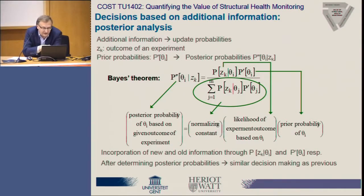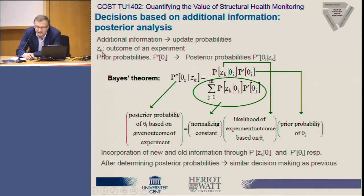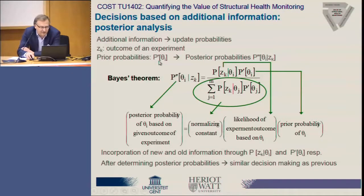In this case, the only difference is that using this new information — the outcome of the experiment, denoted here as Z_k — the decision maker can update the prior probabilities and find posterior probabilities. The notation here is that prior probabilities are denoted as P-prime and posterior probabilities as P-double-prime, and they are conditional on this new information.